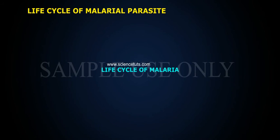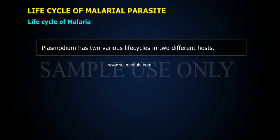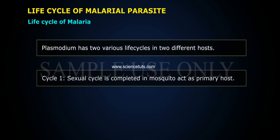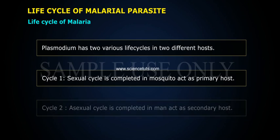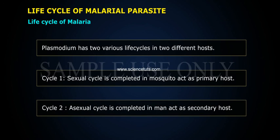Life Cycle of Malaria: Plasmodium has two various life cycles in two different hosts. Cycle 1: The sexual cycle is completed in the mosquito, which acts as the primary host. Cycle 2: The asexual cycle is completed in man, who acts as the secondary host.